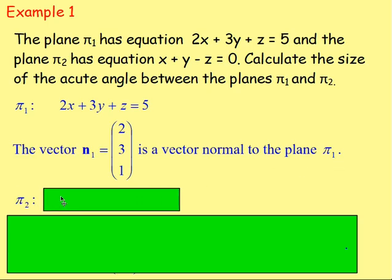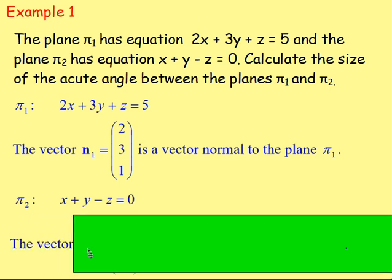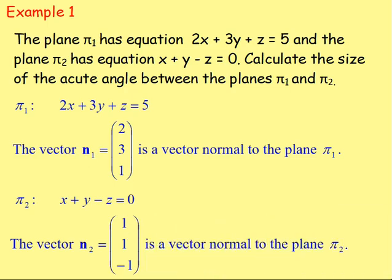With our plane π₂, that is x + y - z = 0. And once again, the coefficients of x, y, and z come from that normal vector. So we can say the vector n₂ will have the components 1, 1, and negative 1. And that will be the vector normal to plane π₂.